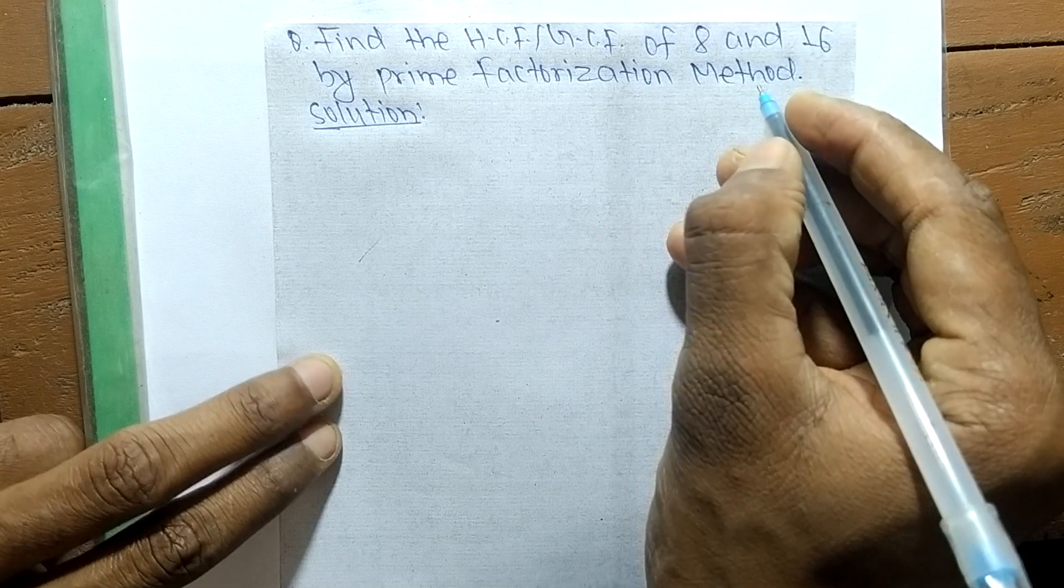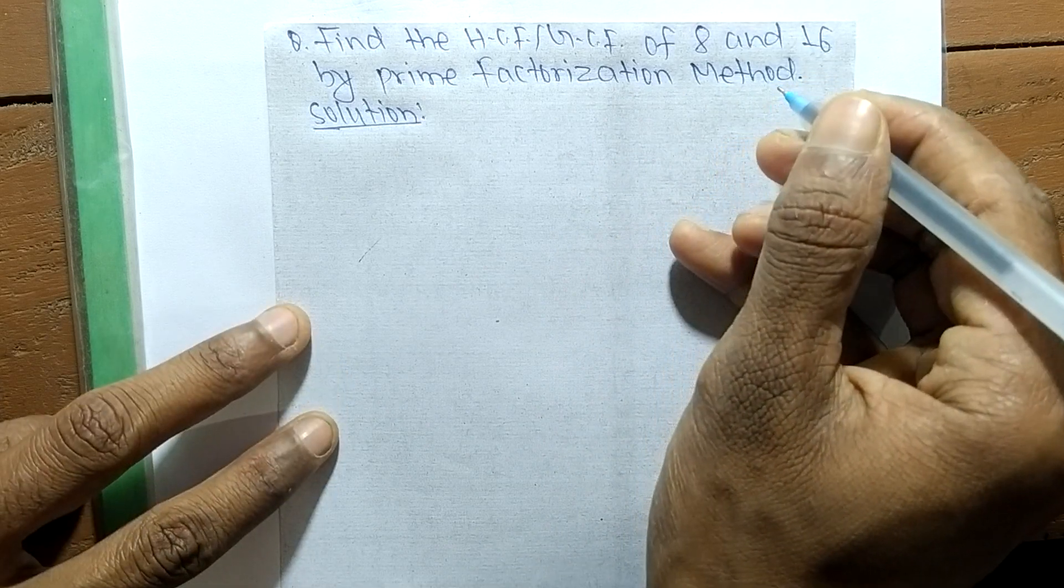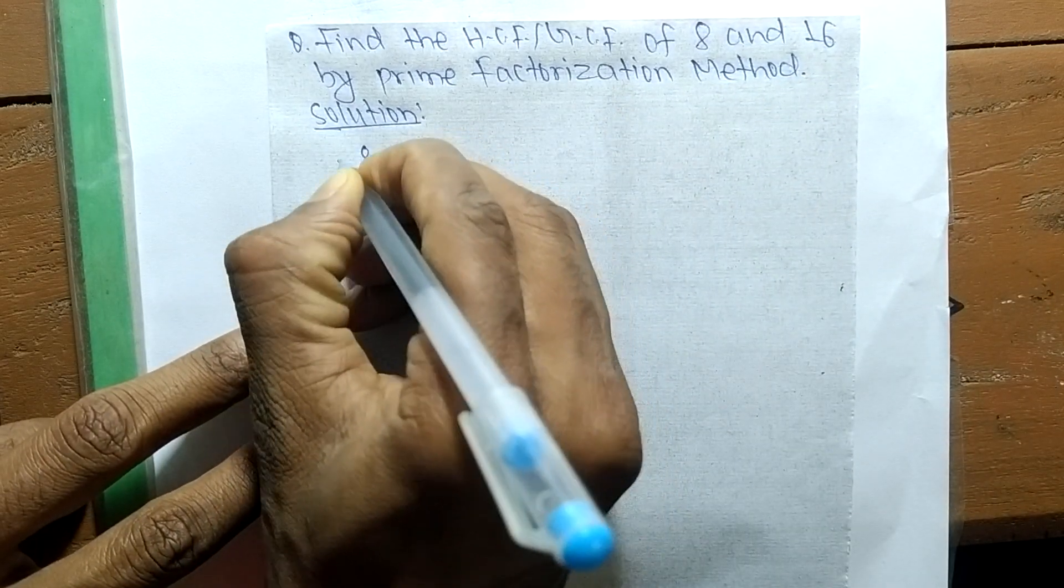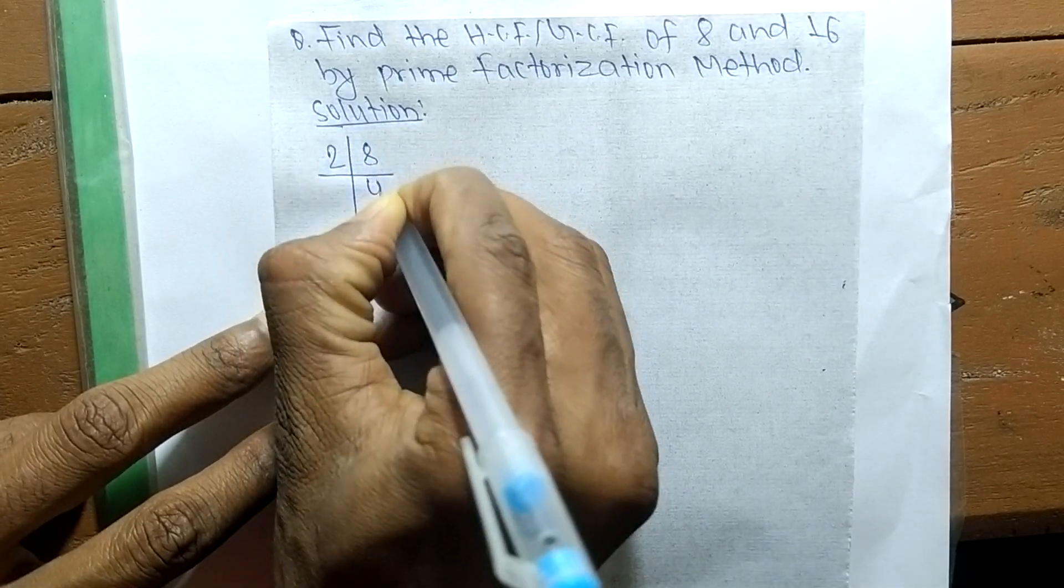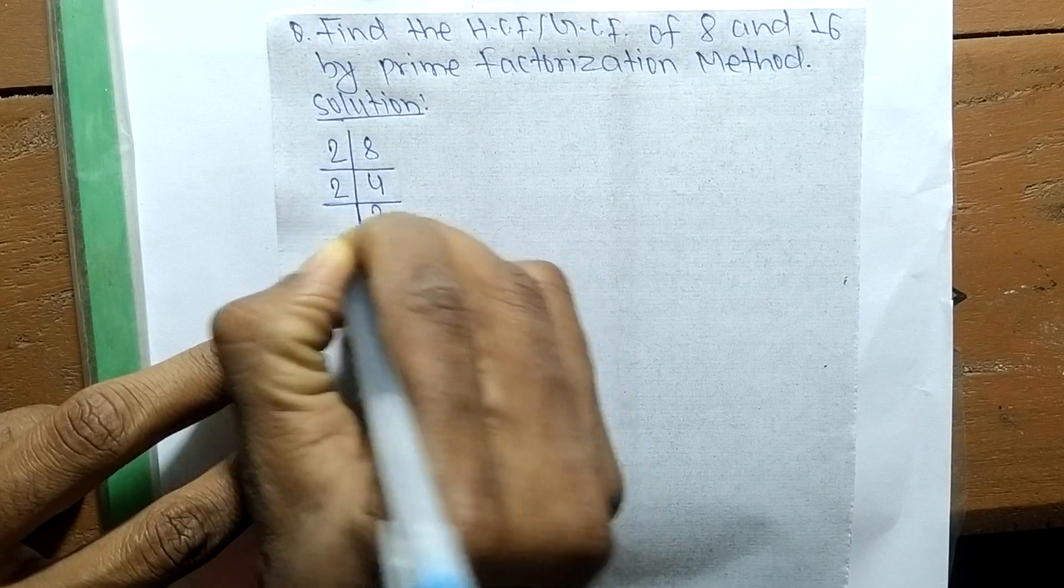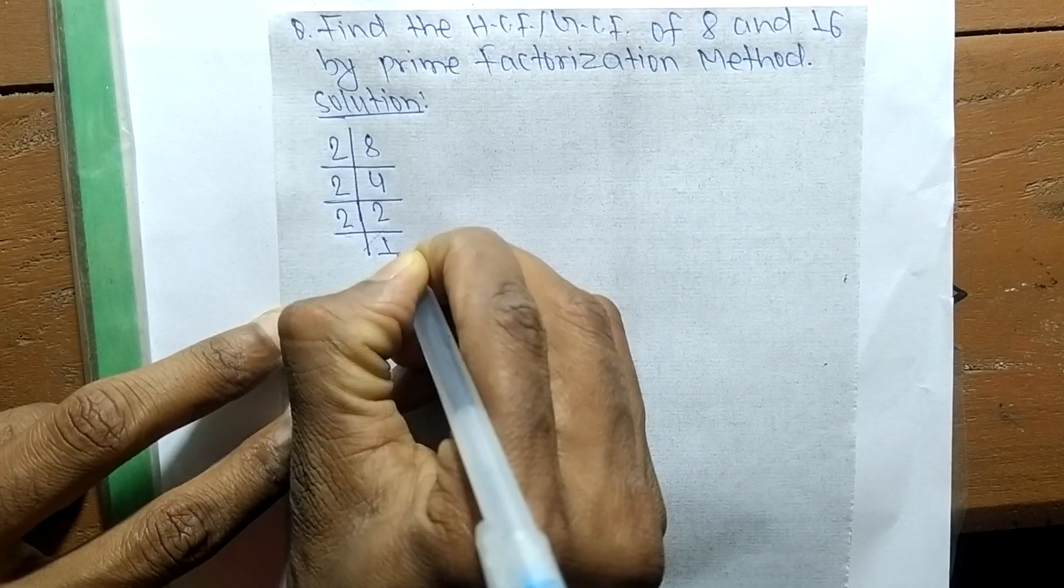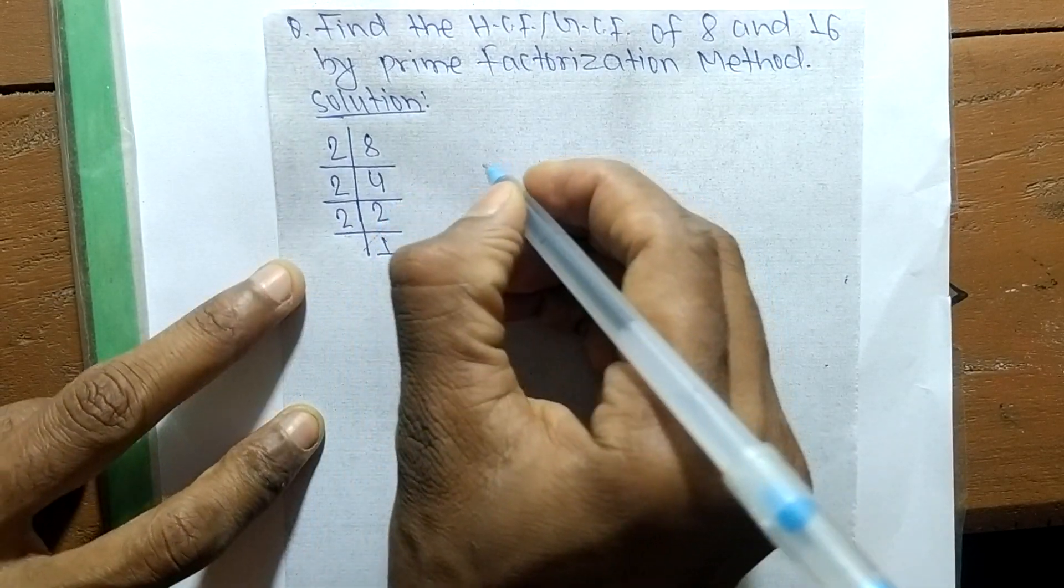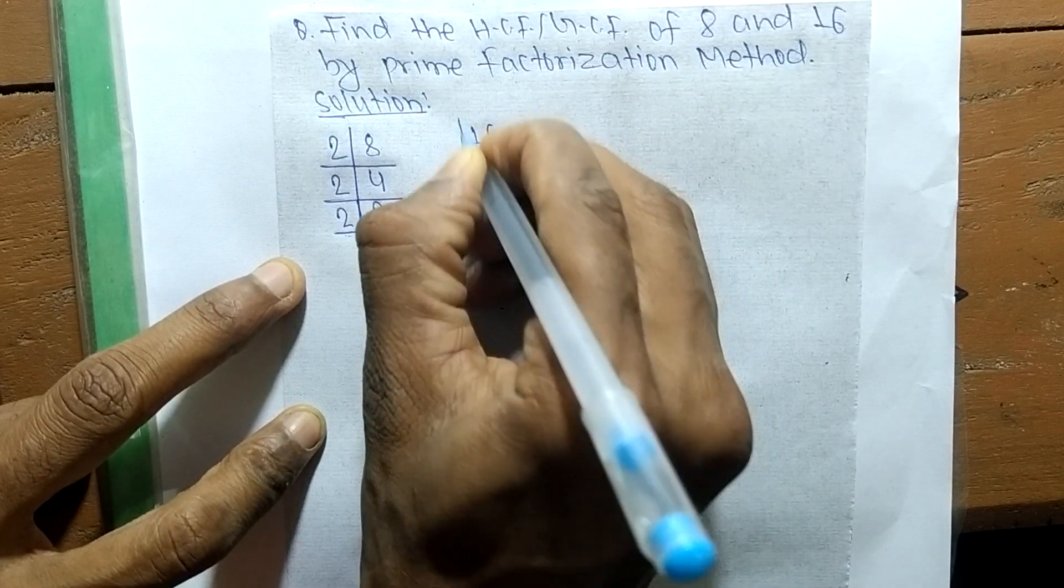First, we find out the prime factors of 8. So it is 2 times 4 means 8, 2 times 2 means 4, and 2 times 1 means 2.